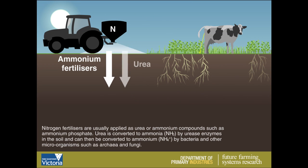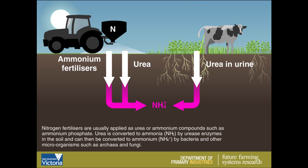Nitrogen fertilisers are usually applied as urea or ammonium compounds such as ammonium phosphate. Urea is converted to ammonia by urease enzymes in the soil and can then be converted to ammonium by bacteria and other microorganisms such as archaea and fungi.